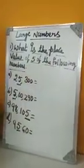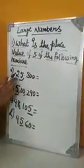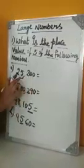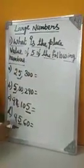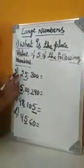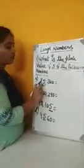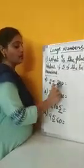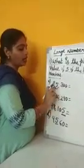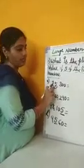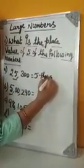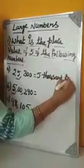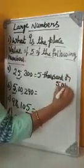What is the place value of 5 in the following numbers? In the given number 25,300, we have to write the place value of 5. When we read this number, 5 is in the 1's, 10's, 100's, or 1000's place? So 5 is in the 1000's place. We will write it as 5,000.